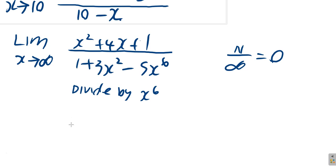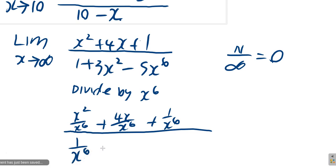So when you divide by x to the 6, you have x squared over x to the 6 plus 4x over x to the 6 plus 1 over x to the 6, over 1 over x to the 6 plus 3x squared over x to the 6 minus 5x to the 6 over x to the 6. What would that give us?